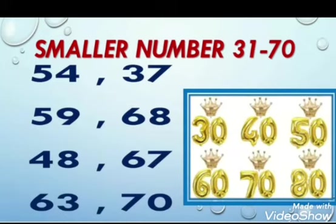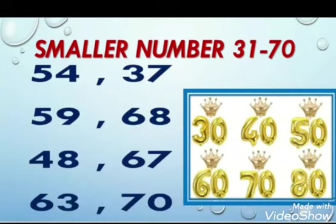We will find out which tens comes first in counting. We will read the tens: 30 — no; 40 — yes! 40 is in this example because 48 comes first in counting, then 67. So 48 is the smaller number.